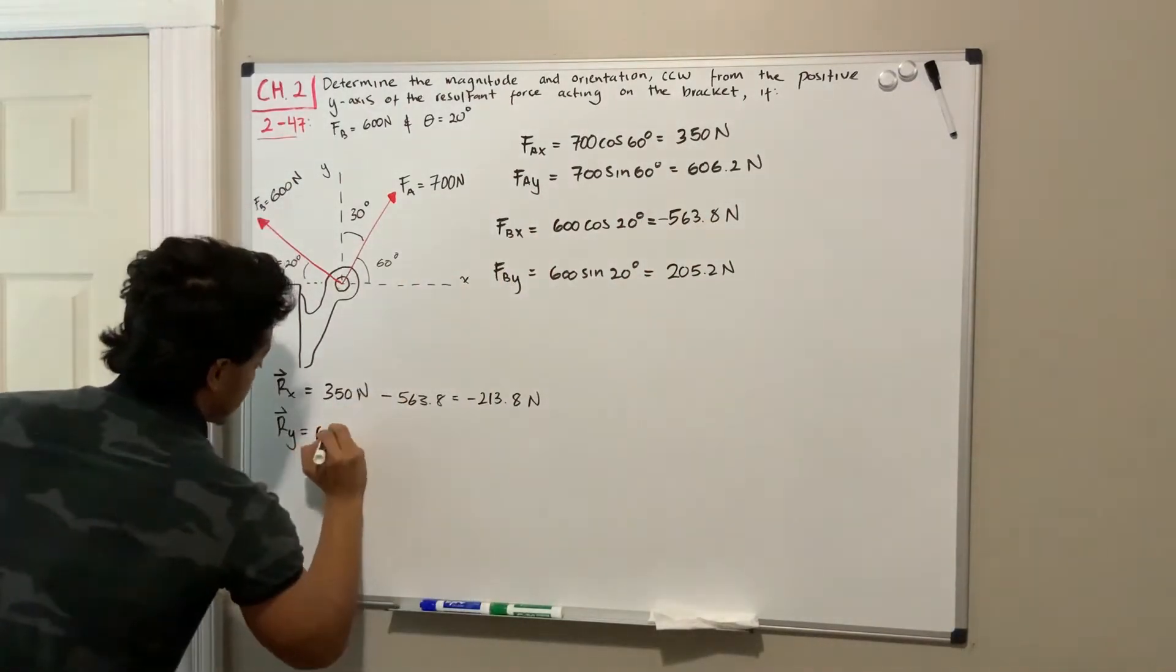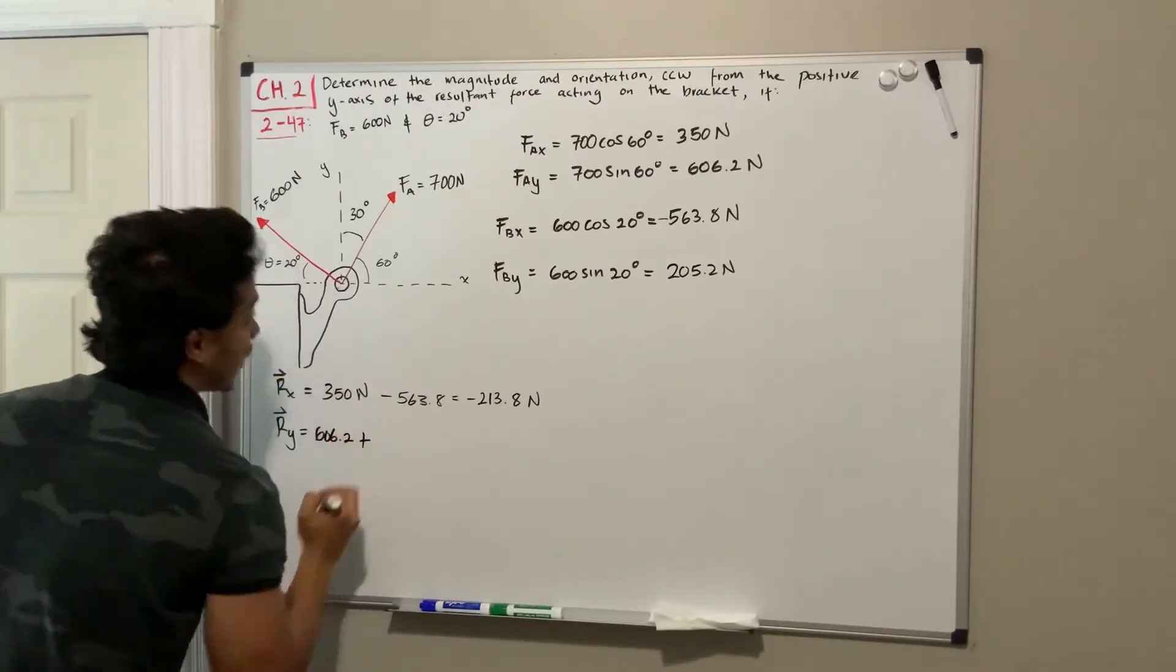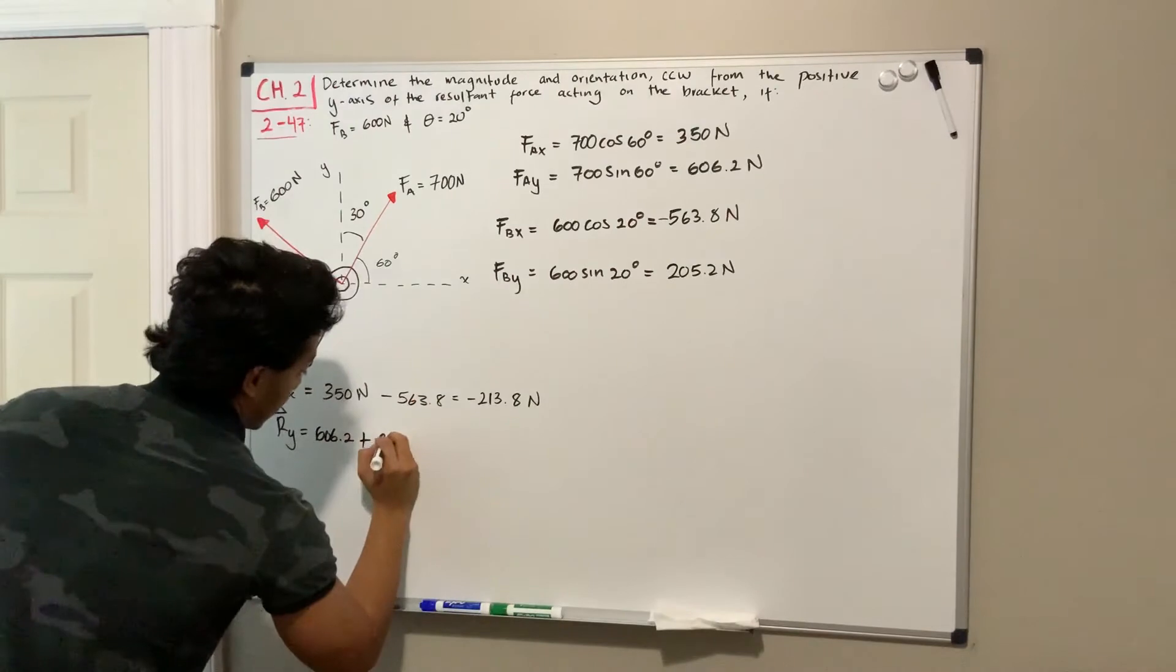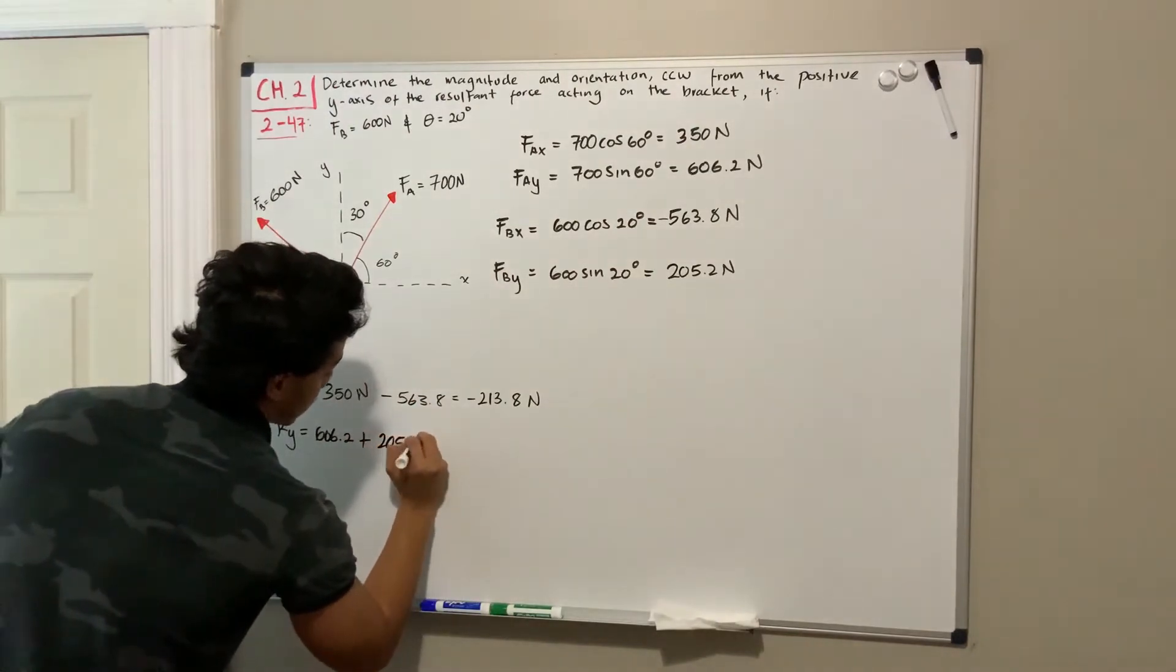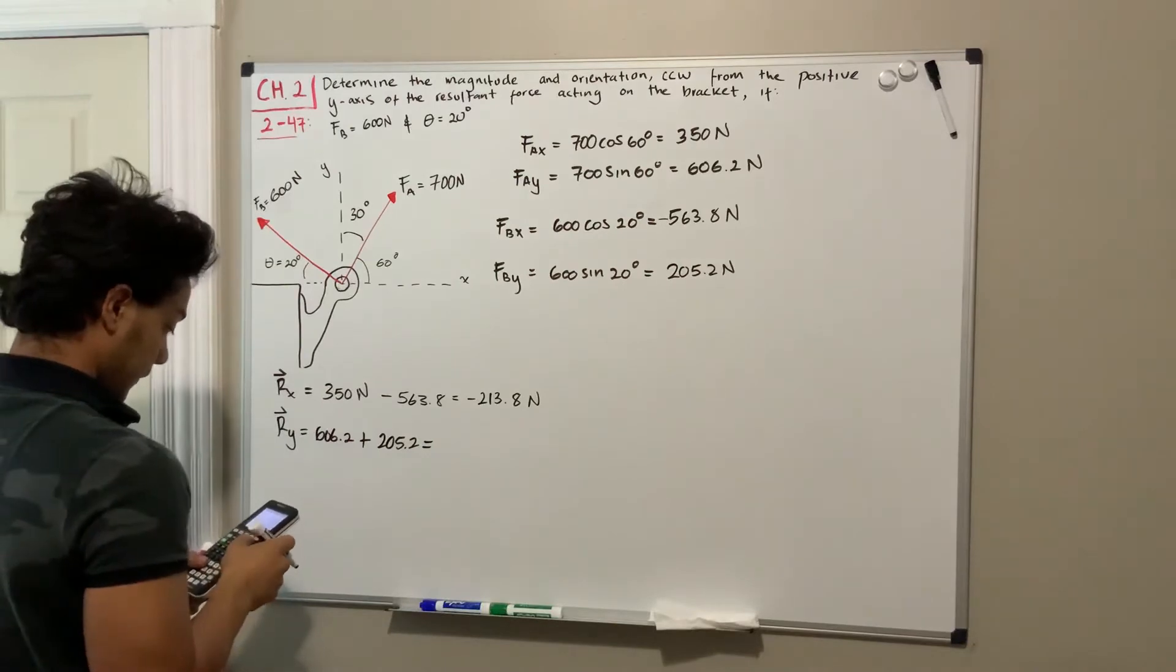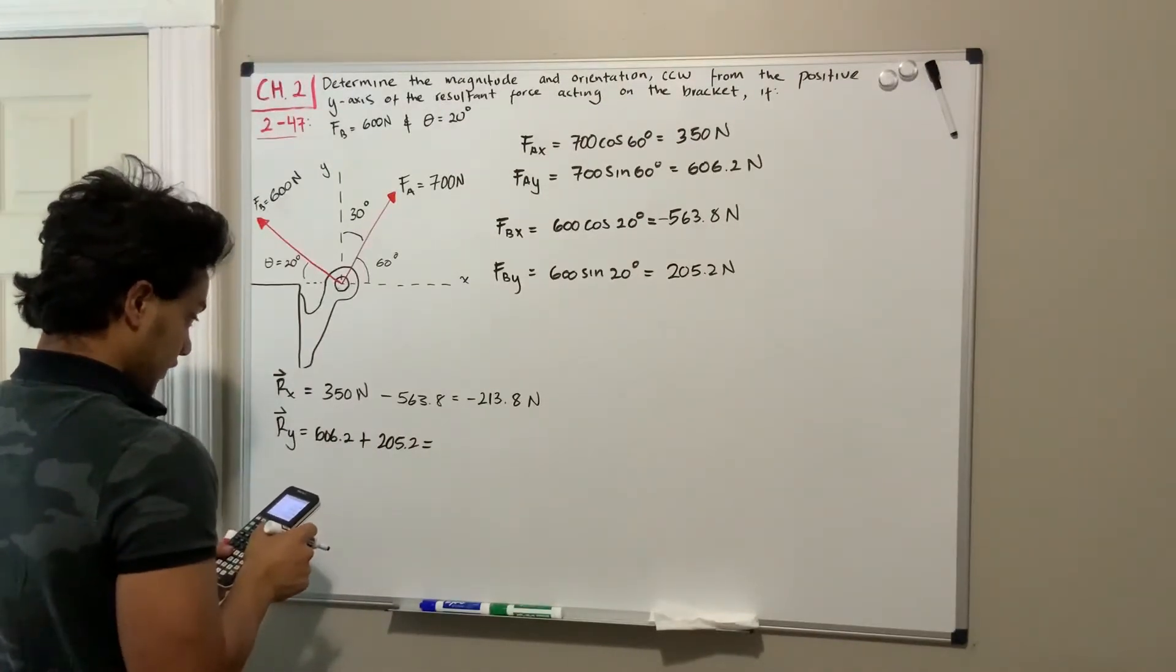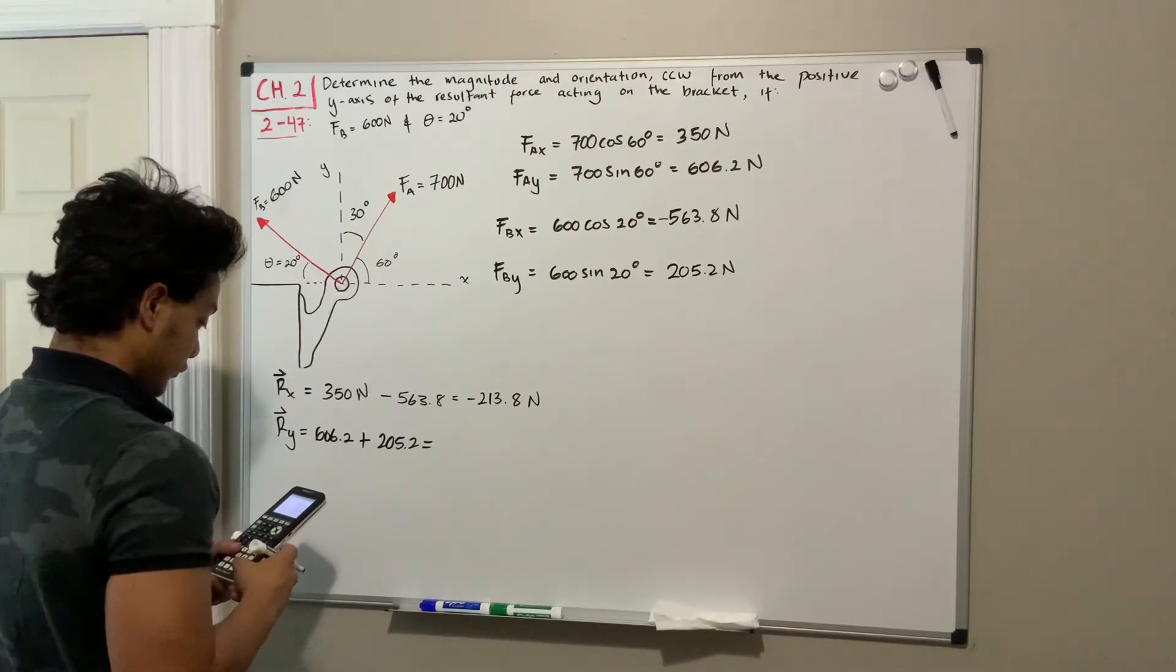Now let's do the resultant in the y-direction, which is going to be F_a_y, which is 606.2 plus 205.2, and this is going to be equal to 811.4 newtons.